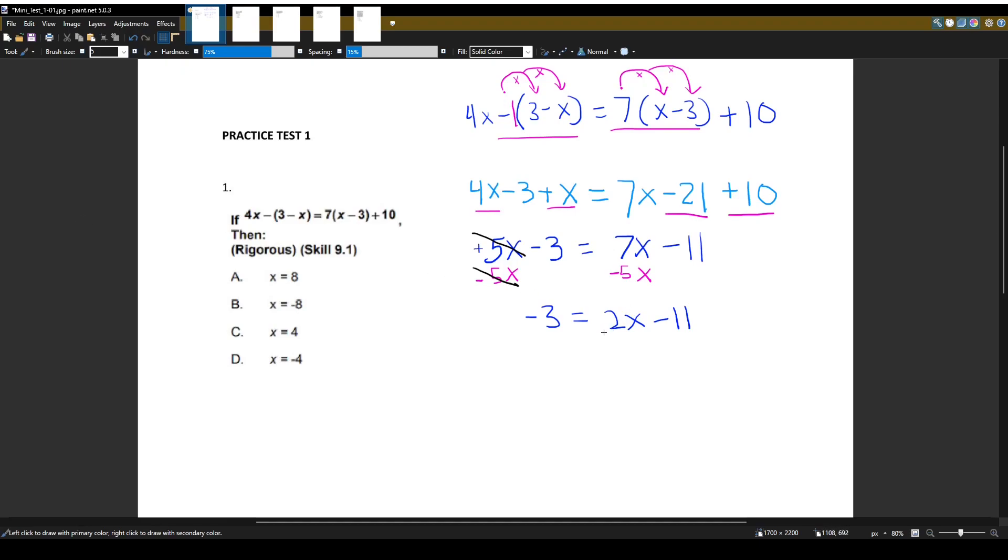All right, since we brought our variables to the right side, we want to bring all the numbers to the left side. This negative 11 needs to go because it's on the right side. So the opposite of negative 11, or minus 11, here it's going to be plus 11. And like an equation, we do it to one side, you have to do it to the other side. I have to add 11 on the left side.